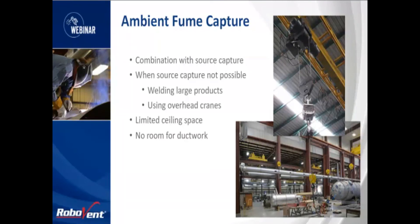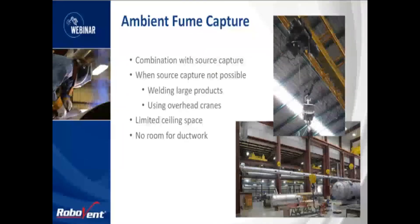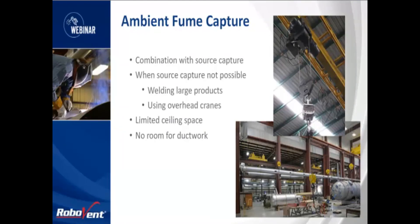In some cases, the plant will need to use both source extraction and ambient extraction systems for the best effect. An example of this might be a plant with 50 welders, where only five of the welders are overexposed to weld fumes. You may choose to use a source capture system for those five workers that are overexposed, and then install an ambient system across the entire facility to reduce the amount of overall haze in the plant.